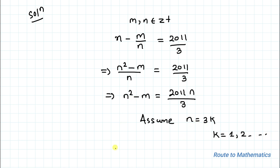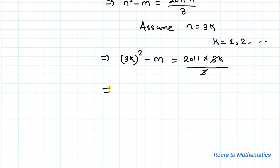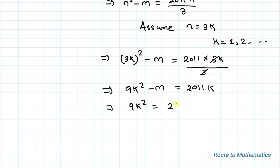So let's assume n equals 3k, where k is a constant. Substituting into the equation, we get (3k)² minus m equals 2011 times 3k divided by 3. The 3's cancel, giving us 9k² minus m equals 2011k.